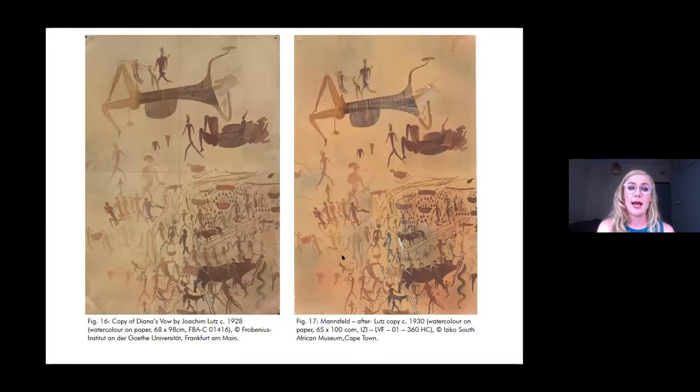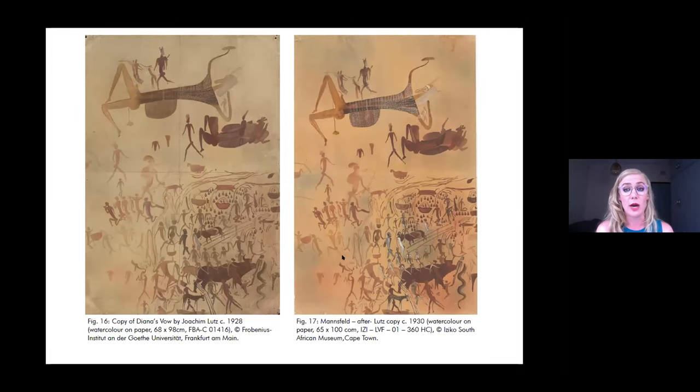As I discovered, Cook was actually partially correct. Mansfeld did produce a copy of Diana's Val, but it was not the first — her copy was in fact a reproduction made from Lutz's original, and was later, along with some 374 copies, shipped to South Africa in 1931 and bequeathed to the South African Museum, now the Iziko South African Museum, where they are still housed today.